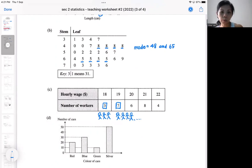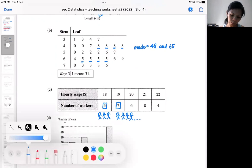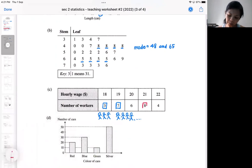If you look at the frequency, which is the highest frequency, we got eight workers earning $21 per hour. So the mode is not the eight workers. The mode is the amount of money. The eight workers is the one that tells us that it's very popular. So the popular hourly wage is $21.